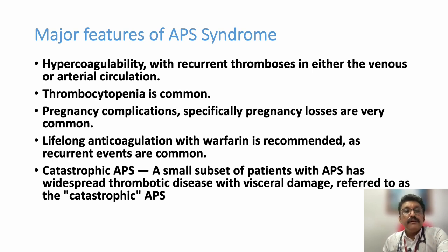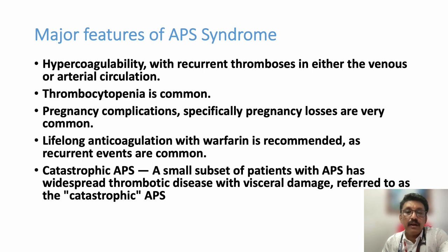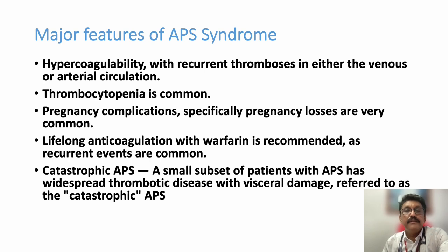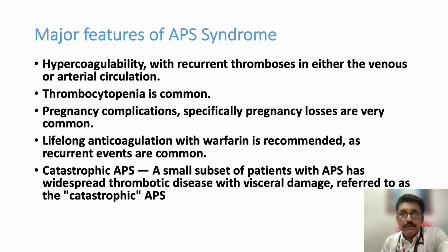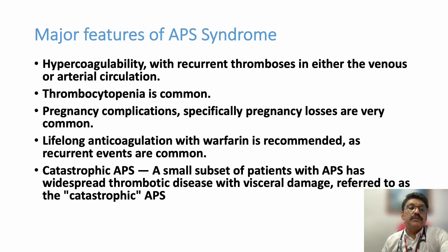The major features of antiphospholipid antibody syndrome include hypercoagulability — it is a hypercoagulable state. Among the various hypercoagulable states, this is one condition characterized by recurrent arterial or venous thrombosis. Many patients also have thrombocytopenia, which can be due to consumption of platelets for thrombus formation or due to immune-mediated destruction. There are various mechanisms for this thrombocytopenia.